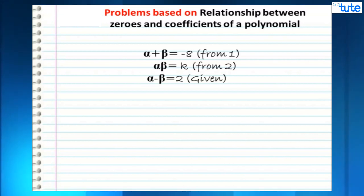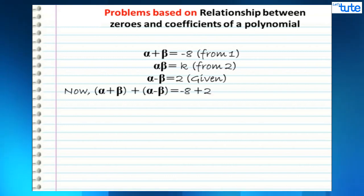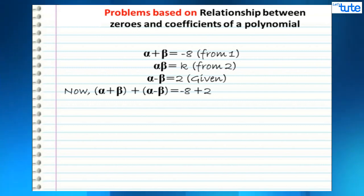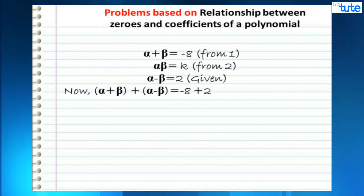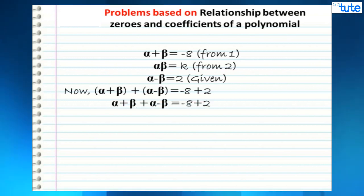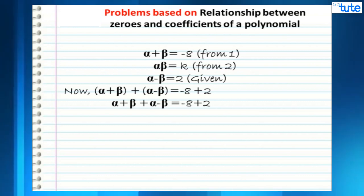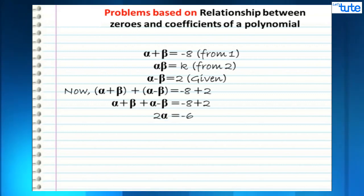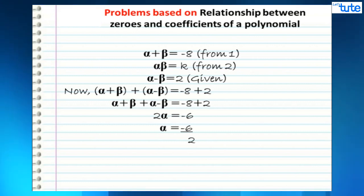To find the value of alpha, we use the expression (alpha + beta) + (alpha minus beta). We know both values: alpha plus beta is minus 8 and alpha minus beta is 2. Opening the brackets, plus beta and minus beta cancel out, giving 2 alpha equals minus 8 plus 2, which is minus 6. Therefore alpha equals minus 6 upon 2, so alpha equals minus 3.